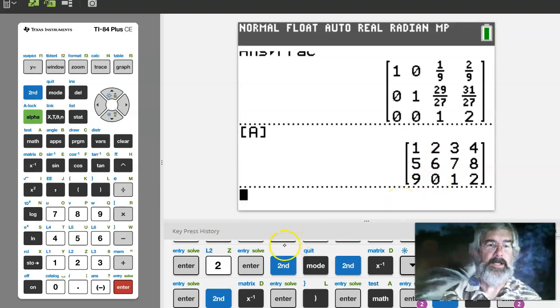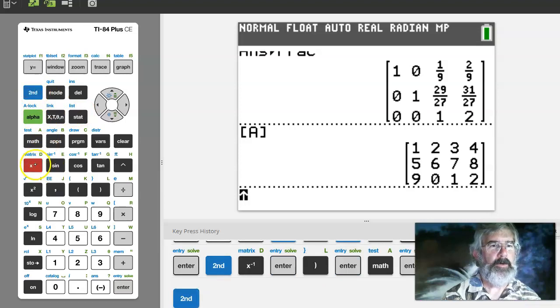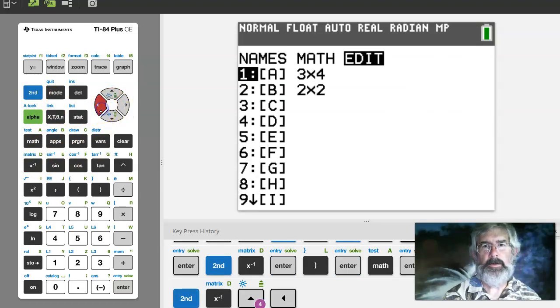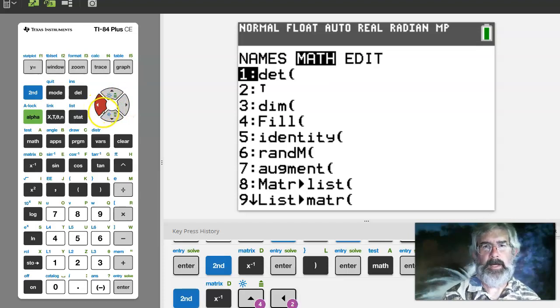Reduced row echelon form on the other hand is unique. So if I went and said give me the reduced row echelon form. Oops, I didn't move over to edit. No, I don't want to edit, I want math.